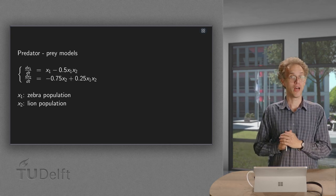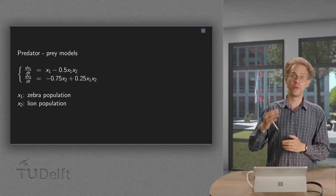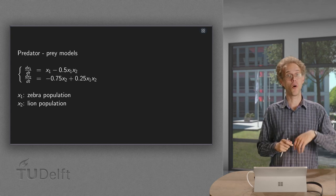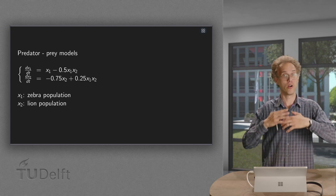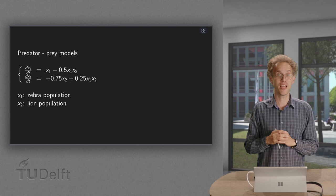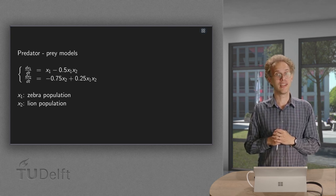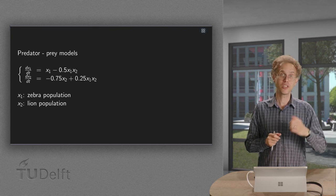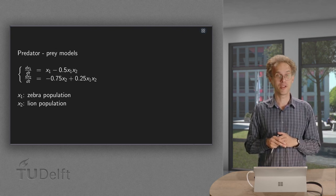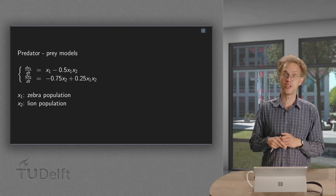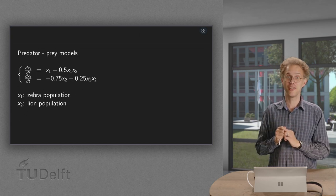So what will happen in the long run? Do they both go extinct? Or do they both grow? Or do we see some periodic behavior? In order to answer this question, some careful analysis is required. Fortunately, we covered all required tools in the previous videos, so we can now analyze this problem.